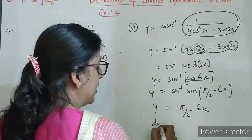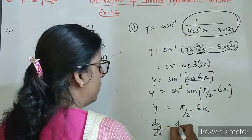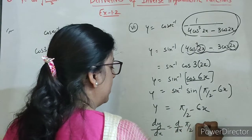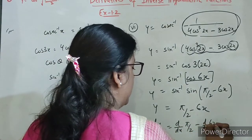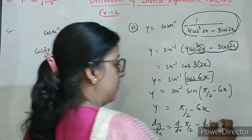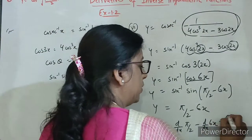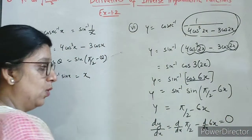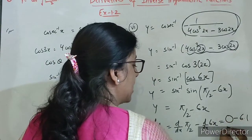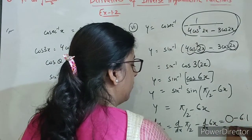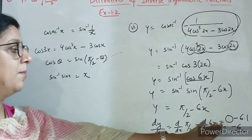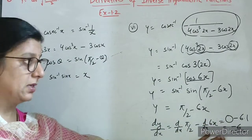Now differentiating on both the sides: pi by 2 ka derivative 0, and then d by dx of 6x ka derivative — pi by 2 ka derivative 0, and minus 6 bahar, x ka derivative 1. So final answer is minus 6.